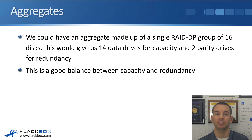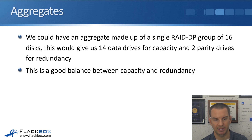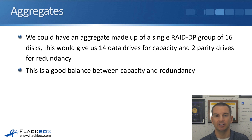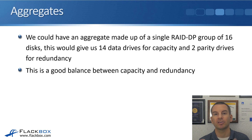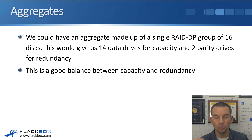For example, an aggregate made up of a single RAID DP group of 16 disks gives you 14 data drives for capacity and two parity drives for redundancy. Using one terabyte drives, you'd have 16 terabytes total but only 14 terabytes usable because two drives are used for parity. That's a good balance between capacity and redundancy.